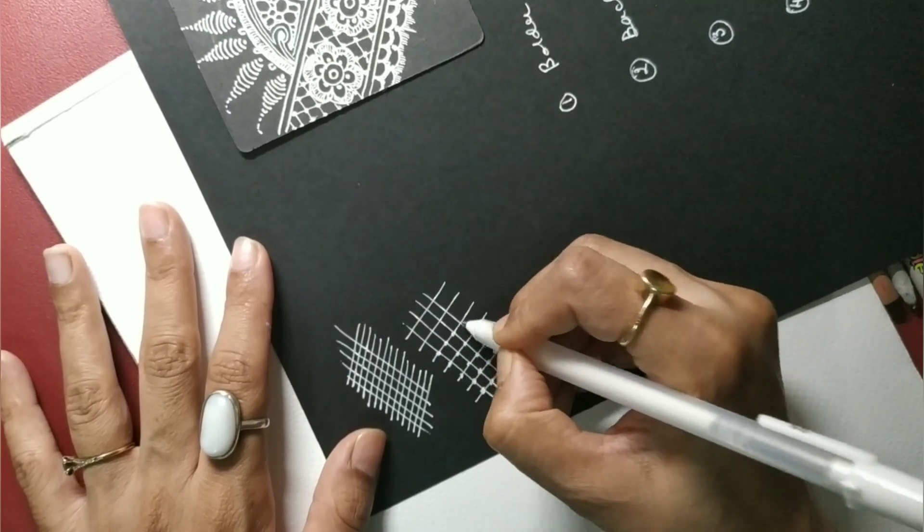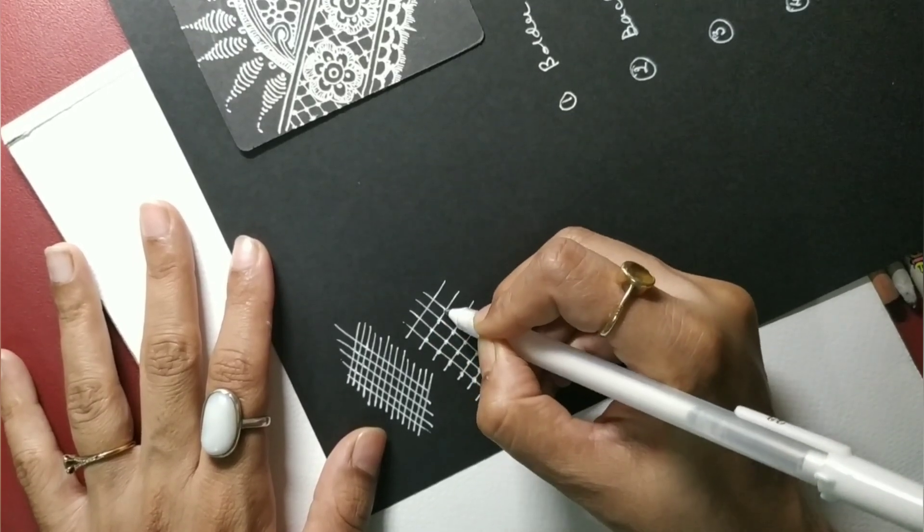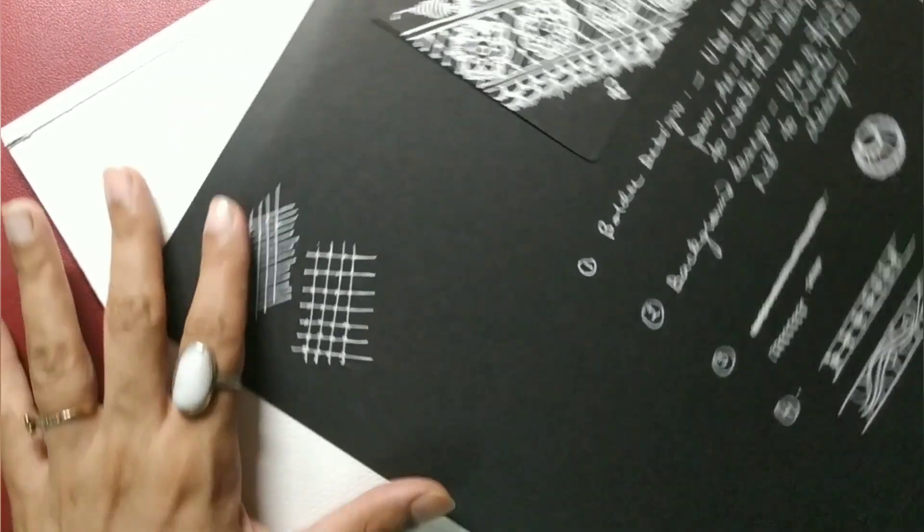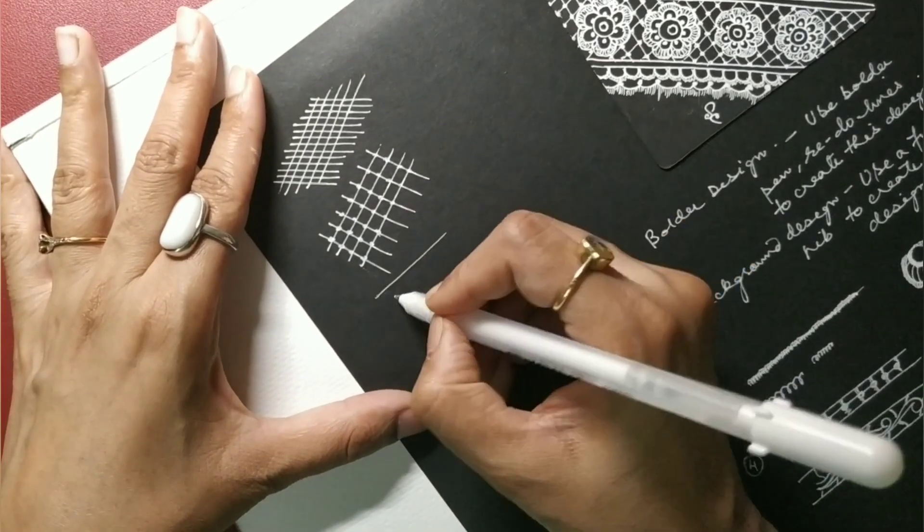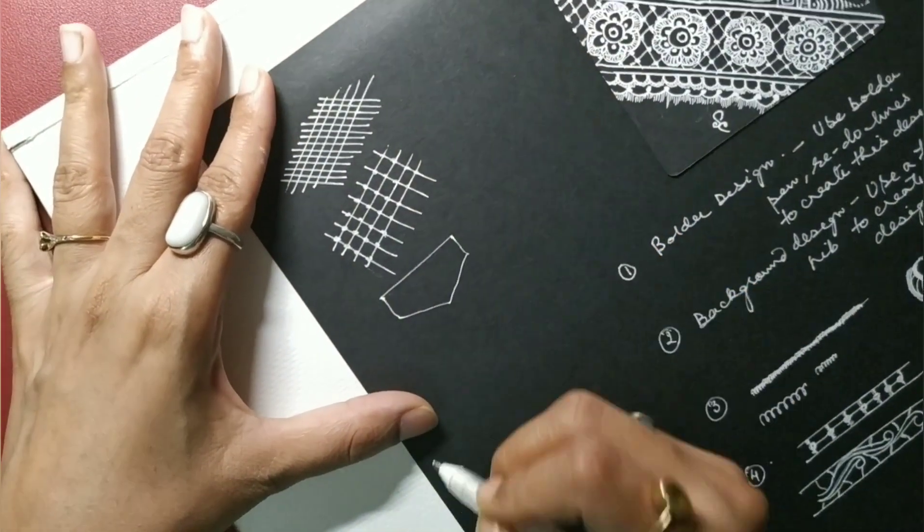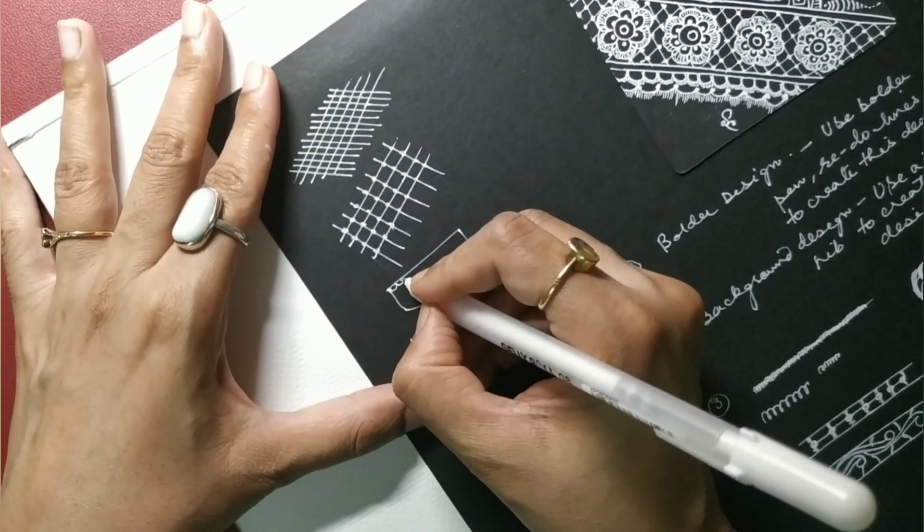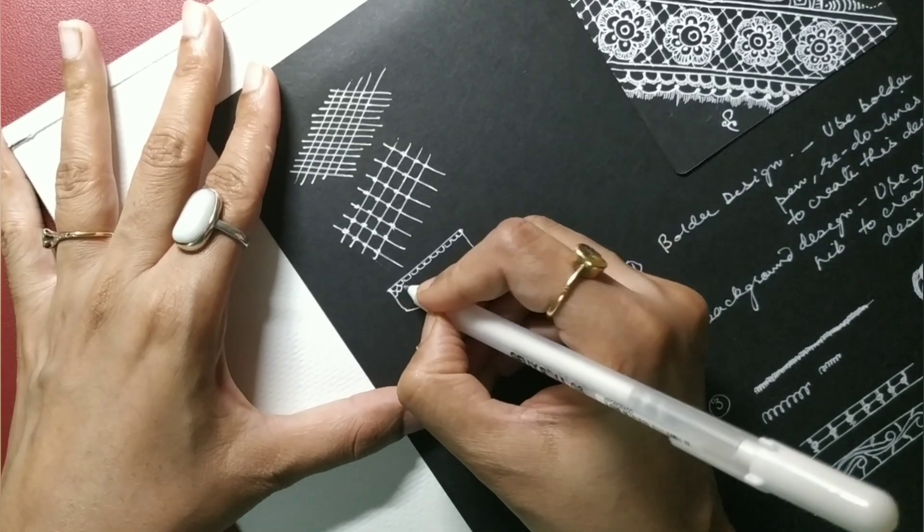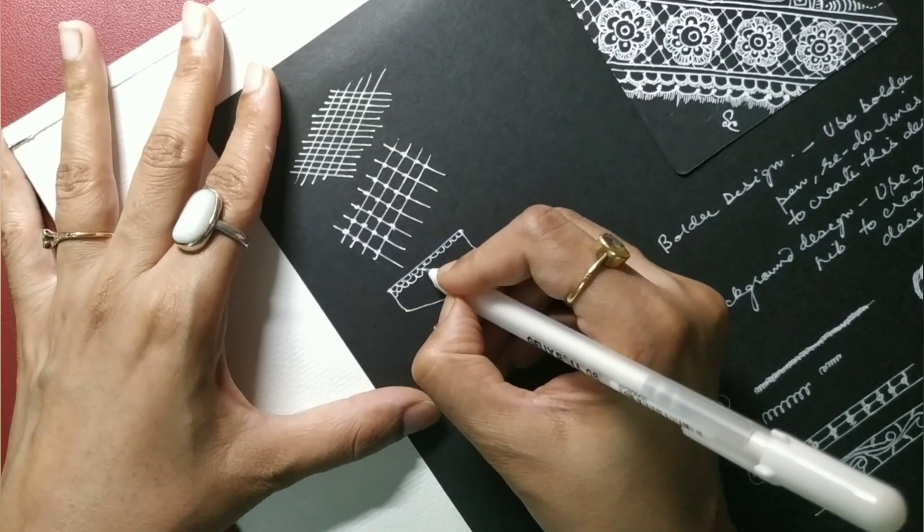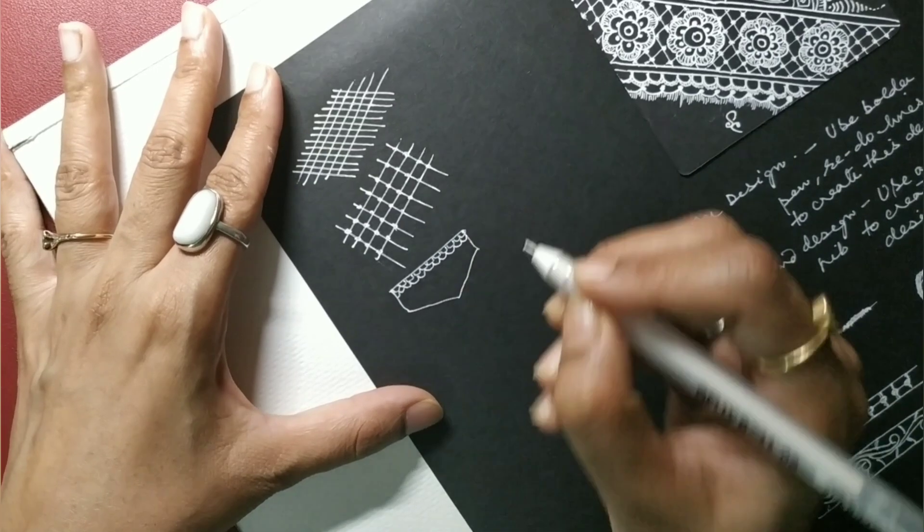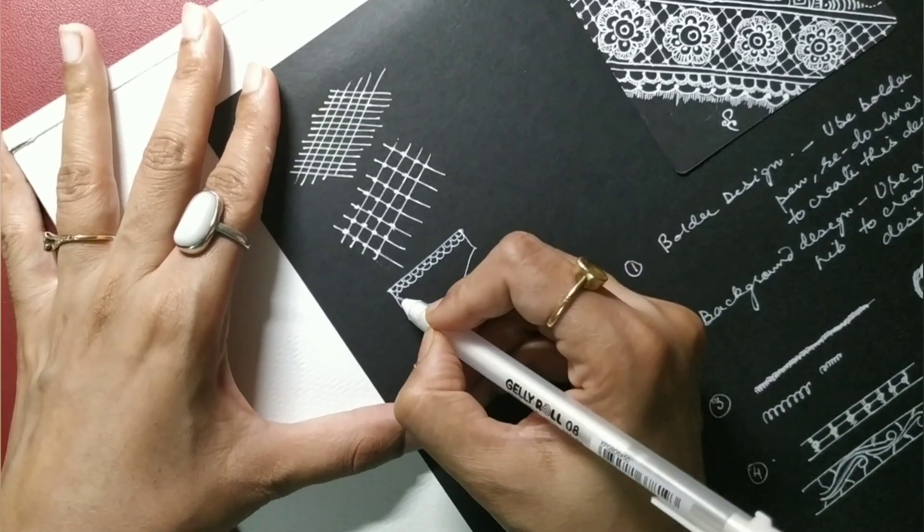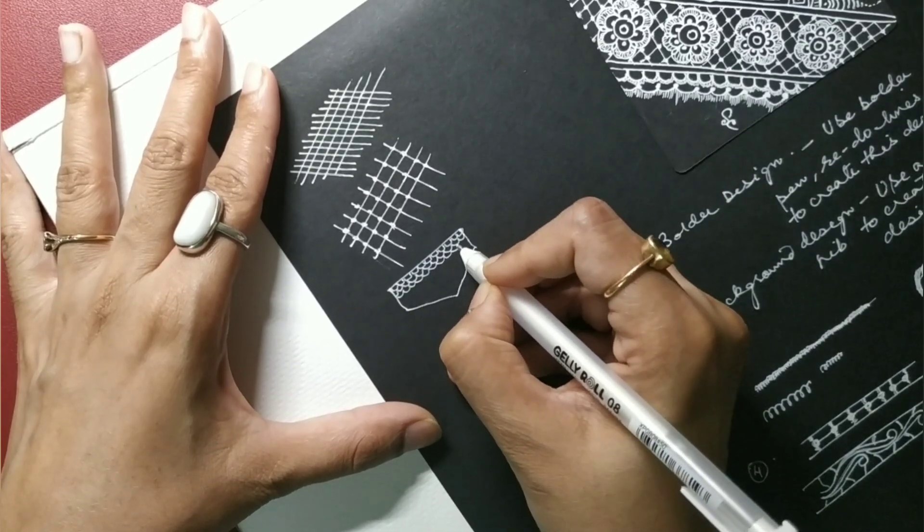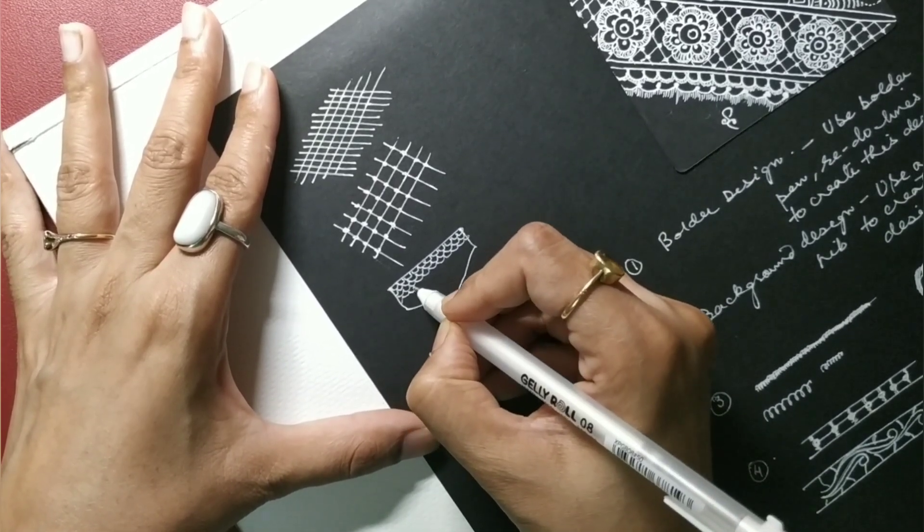You can also give a fish scale kind of background. If this is the space you have, I can draw small little loops like this and then alternate it so the next loop's center will be in between, just like we draw the tangle tag. This is also a very common background.